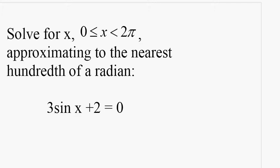So we have 3 sine x plus 2, which means we have 3 sine x equals negative 2, sine of x equals negative 2 over 3.